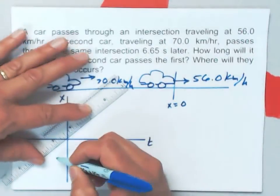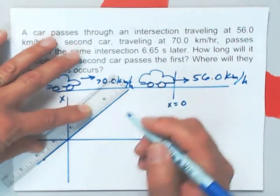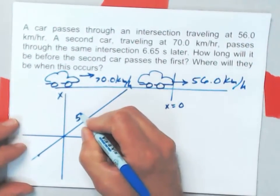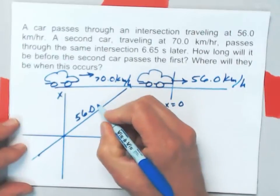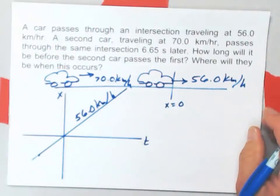Here's the first car. And there's the graph of its motion. This is the 56.0 kilometer per hour car. That's the slope of its graph.